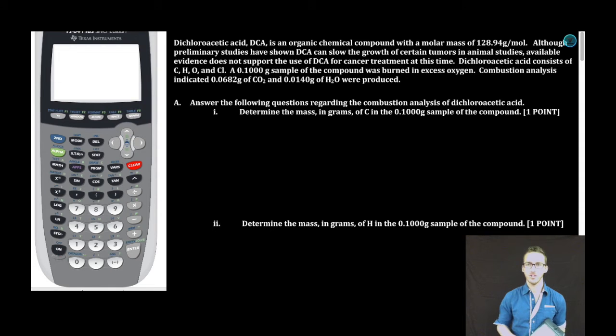Gotta love mole conversion questions. I'm trying to determine the mass in grams of carbon. As I look at this problem, 0.0682 grams of carbon dioxide was formed. Carbon in that carbon dioxide could only have come from the dichloroacetic acid. So if I can figure out the mass in grams of carbon in the 0.0682 grams of carbon dioxide, then I also know how much carbon was originally in the DCA.